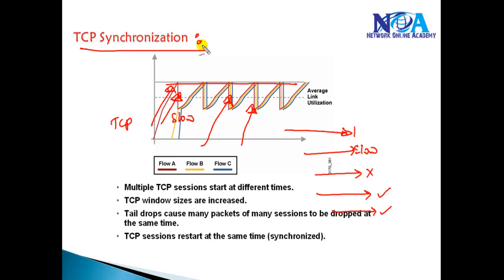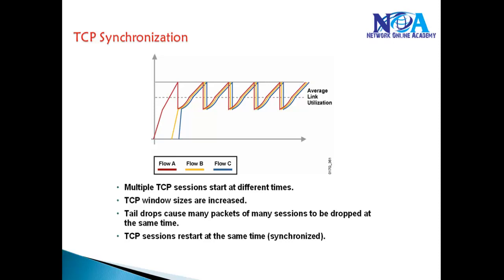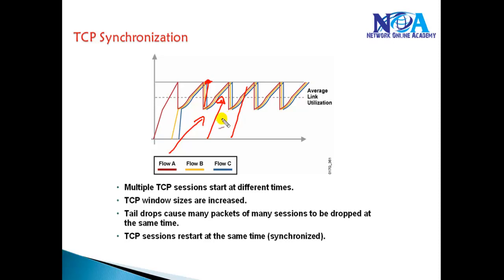One major drawback of TCP synchronization is that it leads to insufficient bandwidth utilization, due to large numbers of packets getting dropped and retransmitted. Once the queue limit is reached, packets are dropped and retransmitted, causing senders to slow down and then increase their rate again — consistently below the stable sending rate.